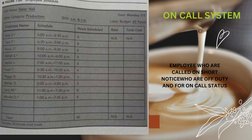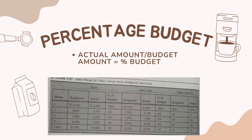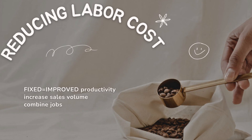Regarding scheduling, it is important to have an on-call system — employees who are called in on short notice when off duty. If we talk about the percentage budget, the actual budget amount divided by the budget amount equals the percentage of the budget. Reducing labor costs is very important: improve productivity by increasing sales and combining jobs.